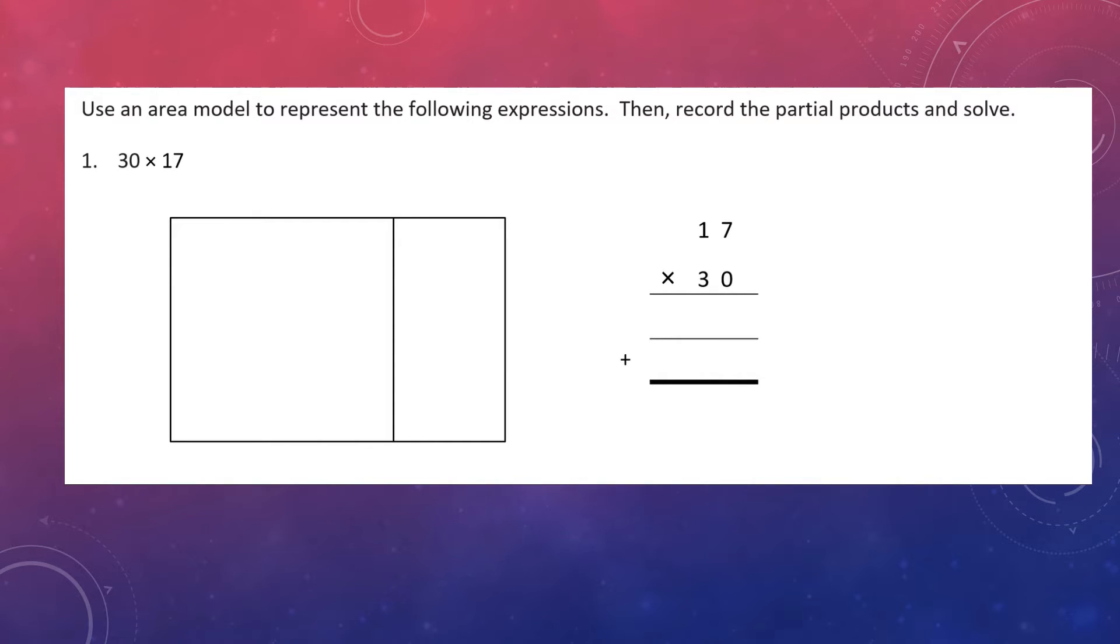This says, use an area model to represent the following expressions. Then record the partial products and solve. The two things we need to do is to use an area model, which is drawn for us, and then record the partial products, which is also partially done for us. We just have to add in those partial products.